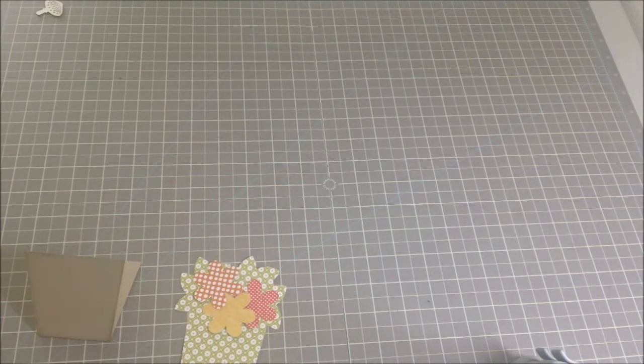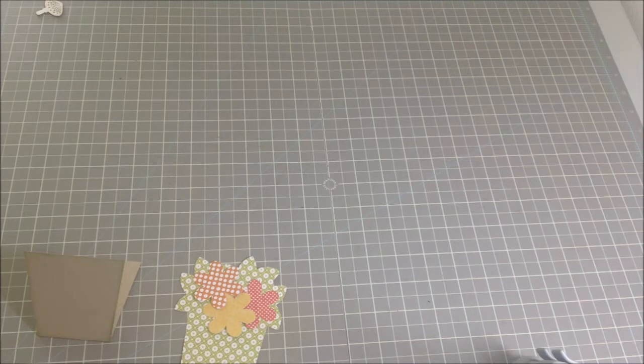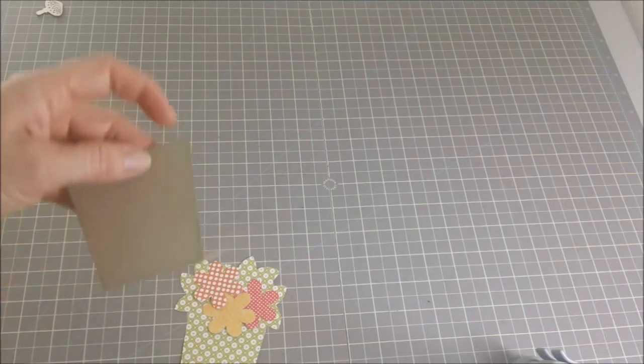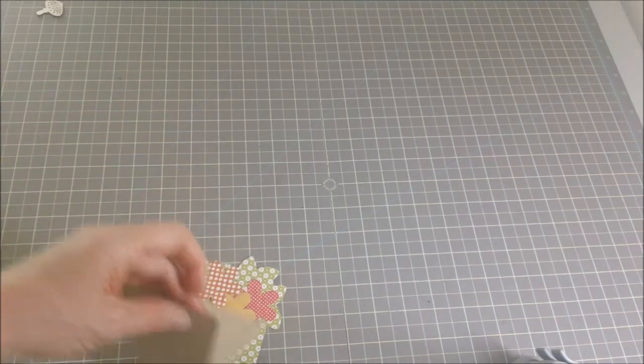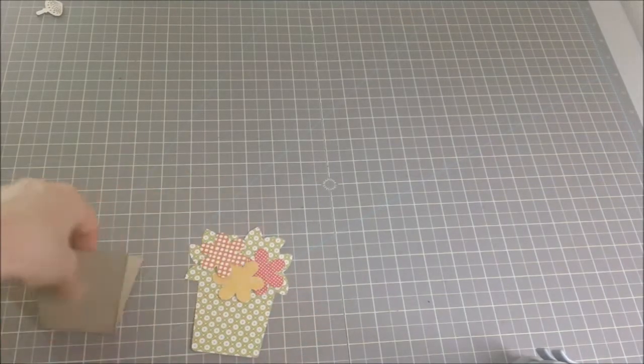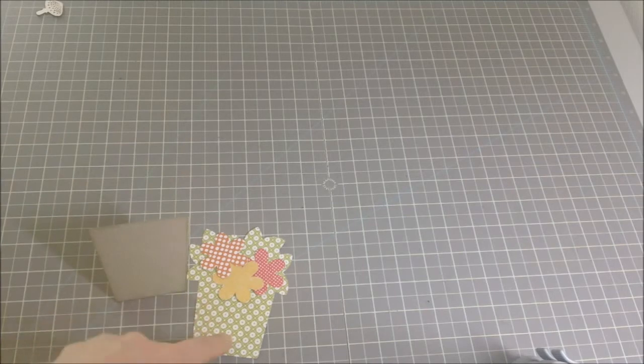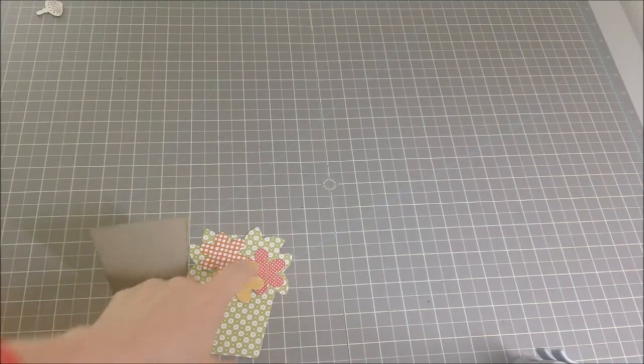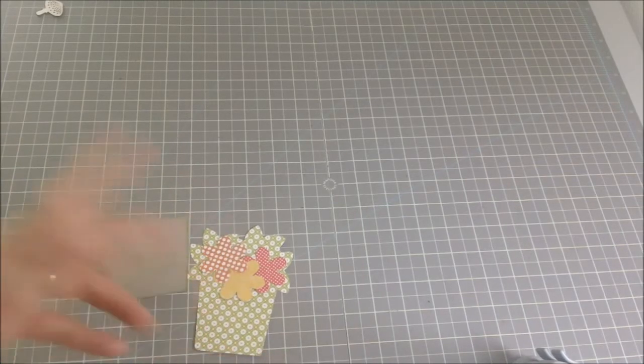If you look on the Silhouette under card kit flower pot, that's where you will find it. It comes with the flower pot part, the green part behind it or whatever color you cut out, and then the flowers. It does come out with some center items to cut out but I decided not to do those.